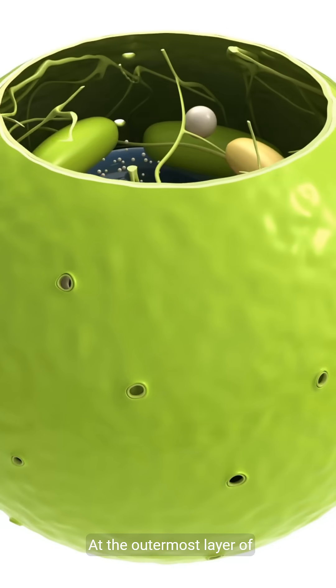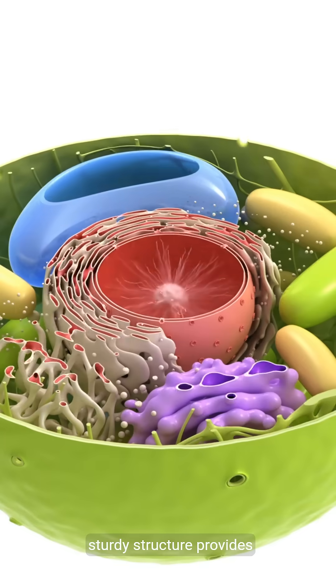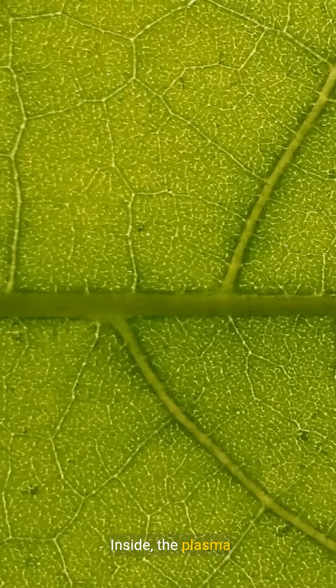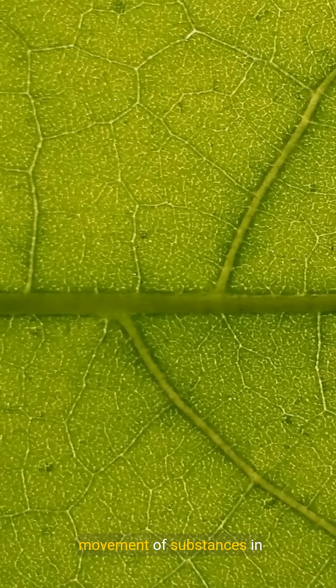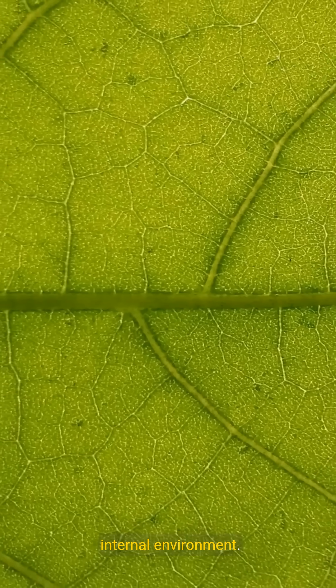At the outermost layer of the plant cell, we find the cell wall. This sturdy structure provides support and protection, ensuring the cell maintains its shape. Inside, the plasma membrane controls the movement of substances in and out of the cell, maintaining a balanced internal environment.